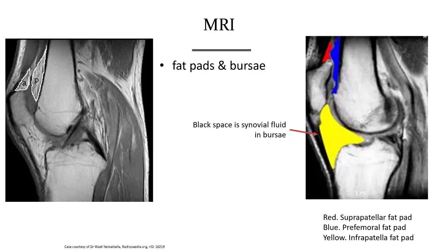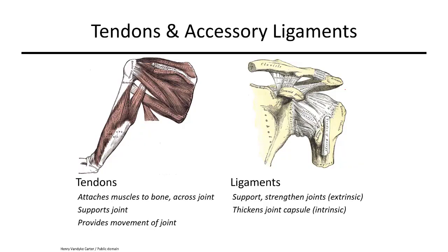On MRI images you can clearly see the fat pads outside the knee, and fluid-filled bursa are shown in black. Tendons are muscle-to-bone connections found across joints, as it is this relationship that causes joints to move. Ligaments are bone-to-bone connections used to strengthen the joints.